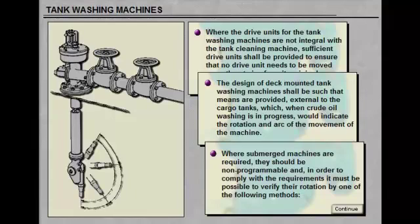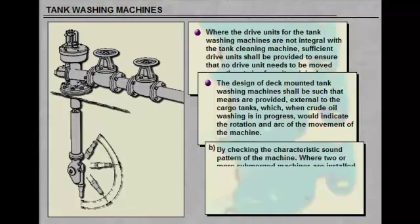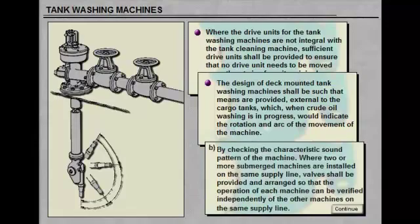A, by indicators external to the tank. B, by checking the characteristic sound pattern of the machine. Where two or more submerged machines are installed on the same supply line, valves shall be provided and arranged so that the operation of each machine can be verified independently of the other machines on the same supply line.